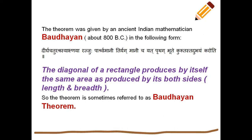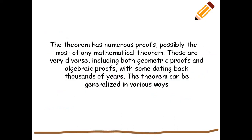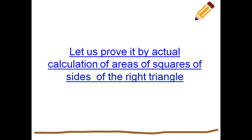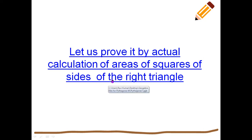Now we can understand how to prove this practically. The theorem has numerous proofs — possibly the most of any mathematical theorem. These are diverse, including both geometric proofs and algebraic proofs, with some dating back thousands of years. The theorem can also be generalized in various ways. Let us prove it by actual calculation of areas of squares on the sides of a right triangle.